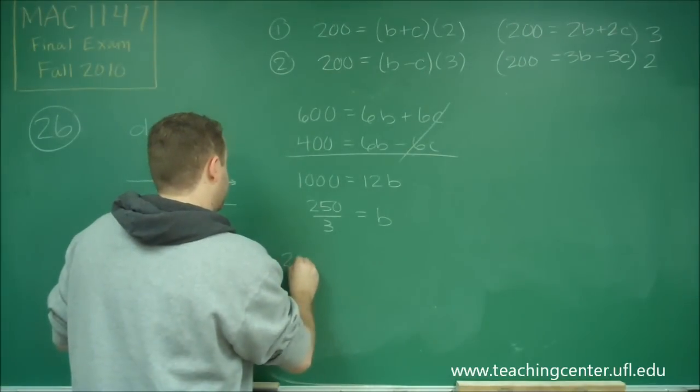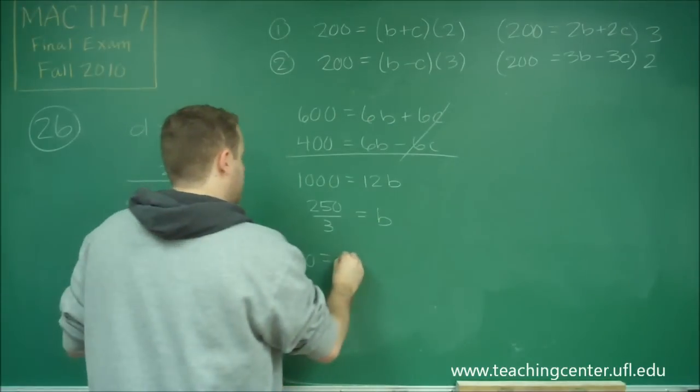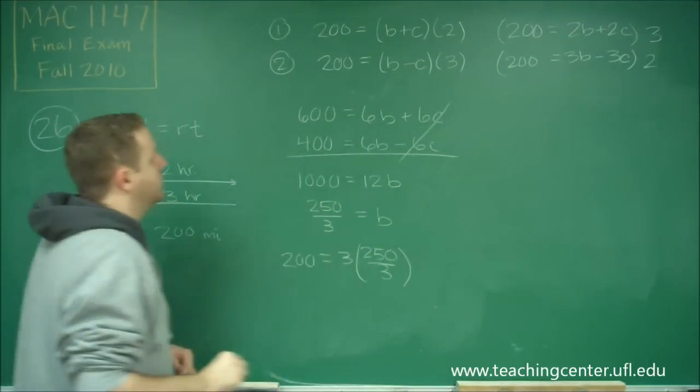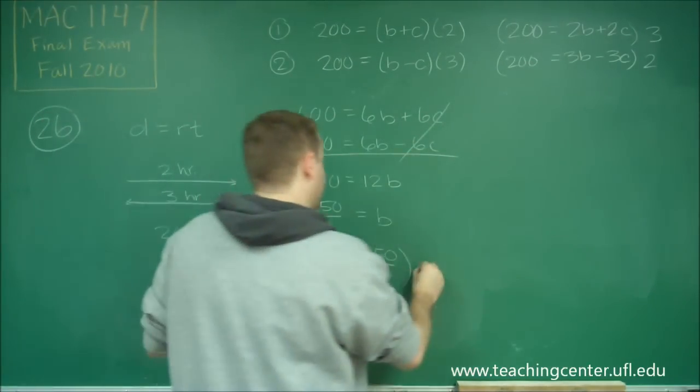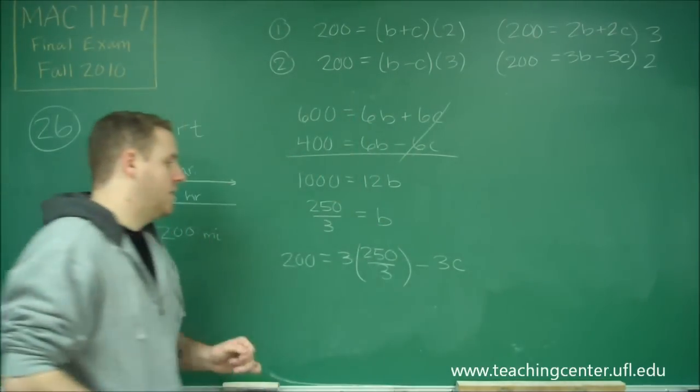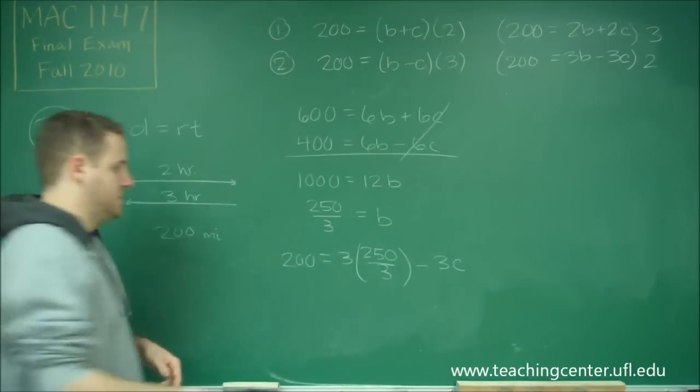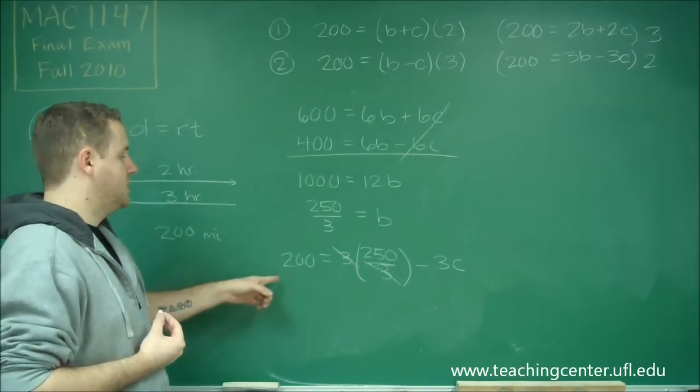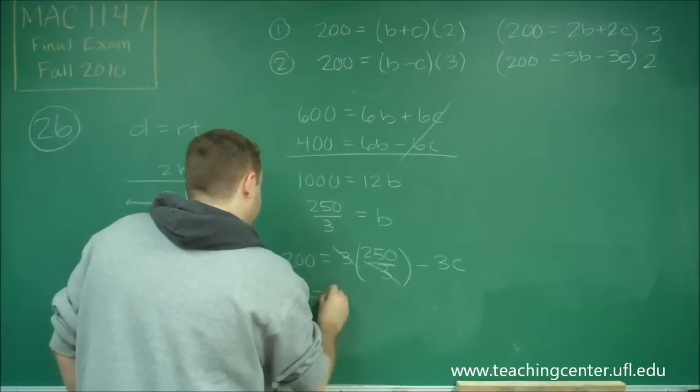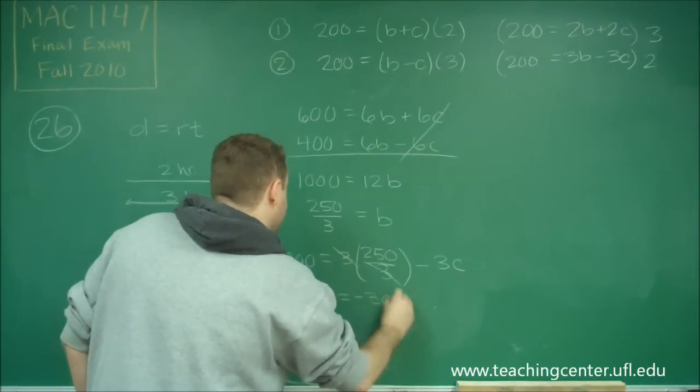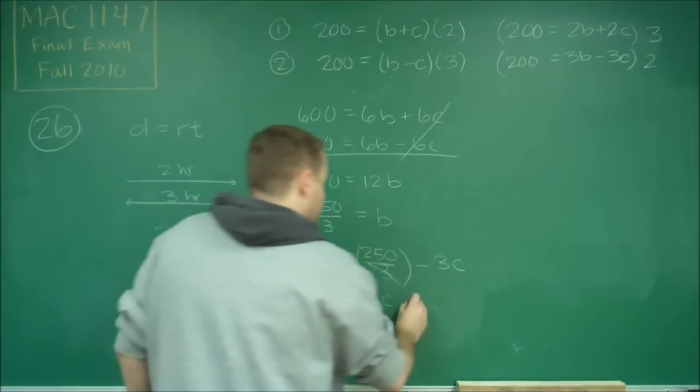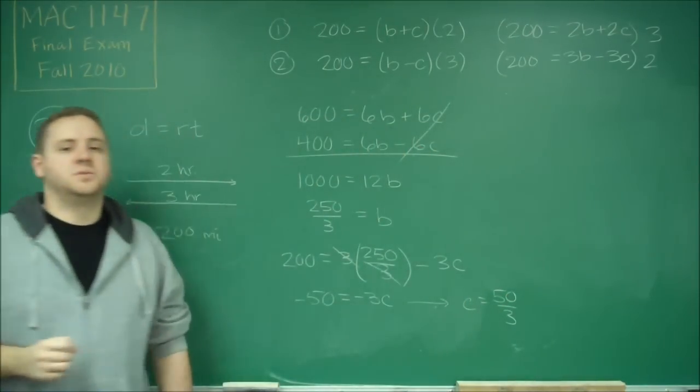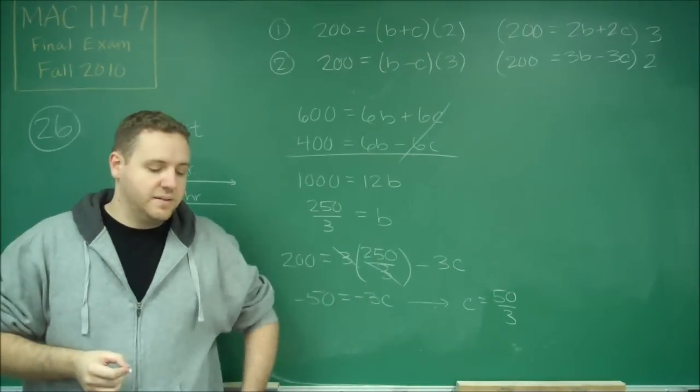So if we plug in there, we're going to get 200 equals 3 times 250 over 3 minus 3C. And now we only have C, and we'll be able to figure this out. So you can cancel out the 3s. If we subtract over 250, we'll get negative 50 equals negative 3C. And then by dividing both sides by negative 3, we get that C is equal to 50 over 3. And that gives us answer choice B.